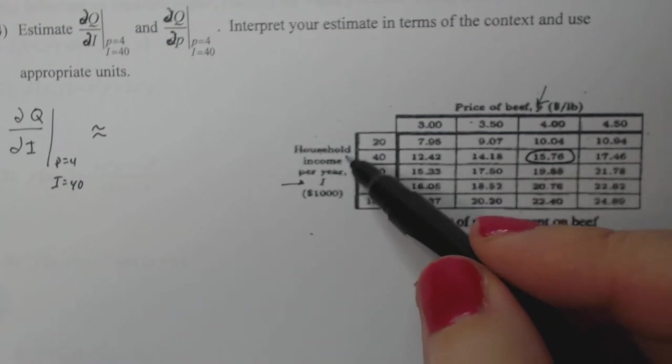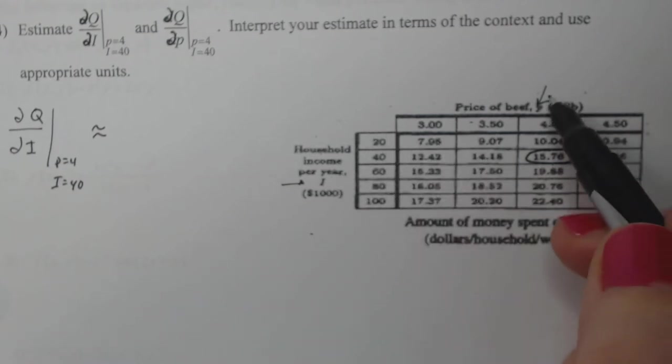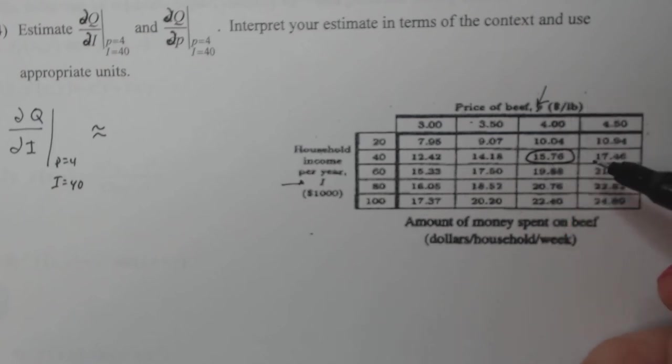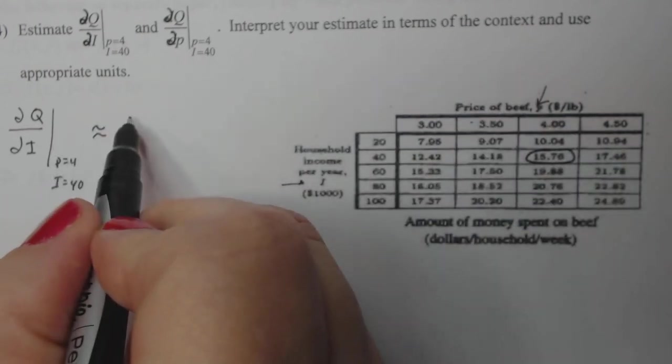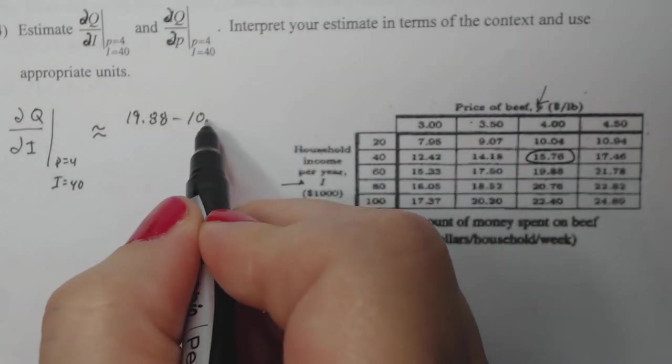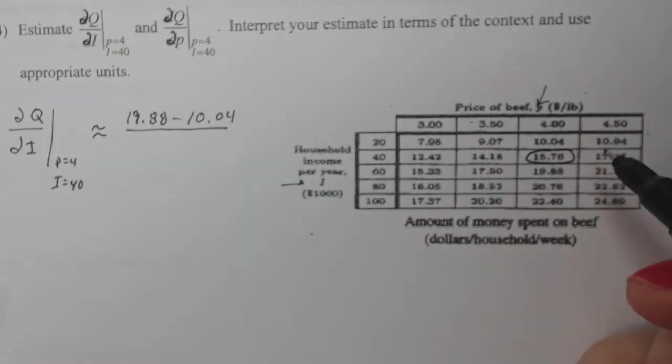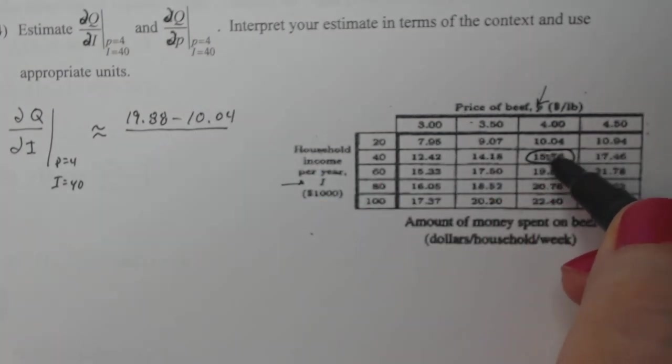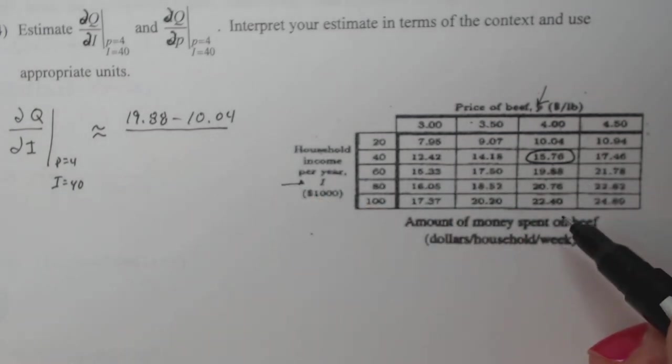So if I do the partial of Q with respect to I from the reference point P equal four, I equal 40, I'm going to take the change in Q over the change in I near that point. Now I is the thing that's changing. So I'm going to keep my P column fixed. So here's my point. I'm going to take the two numbers around it for my change in Q.